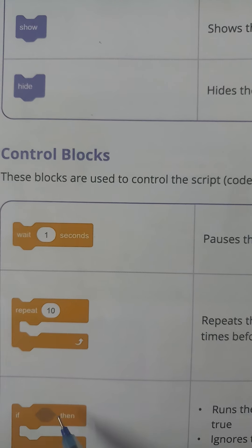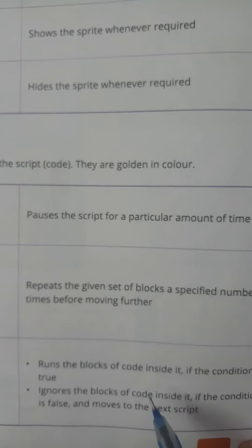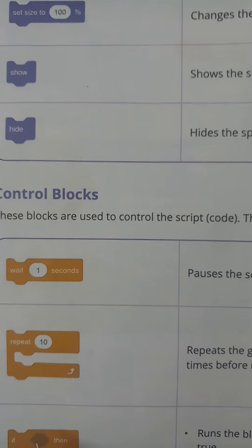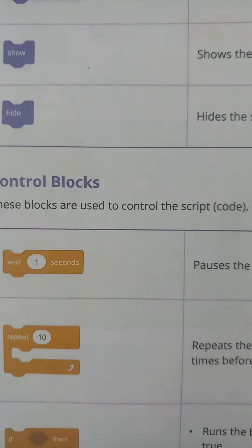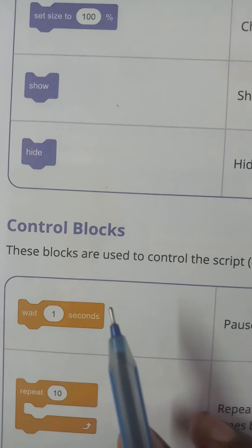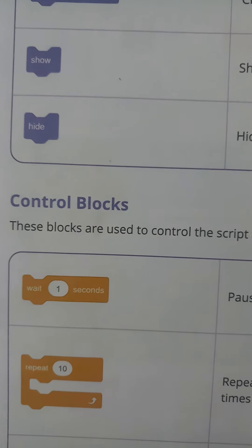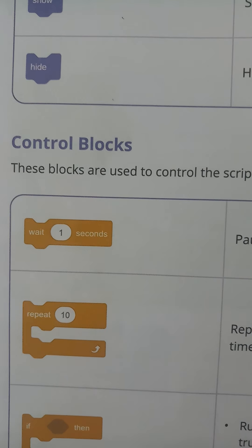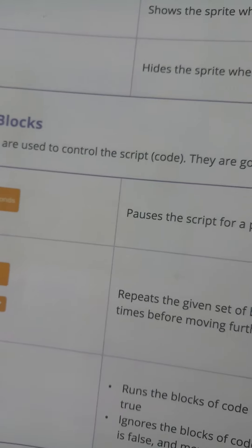Next is the 'If' condition statement. It runs the blocks of code inside it if the condition is true, and ignores the blocks of code if the condition is false. If the condition becomes true you can proceed with those blocks; if the condition becomes false you move to the next script.